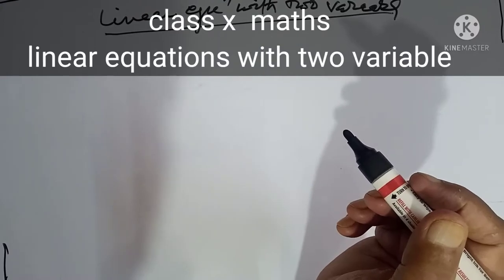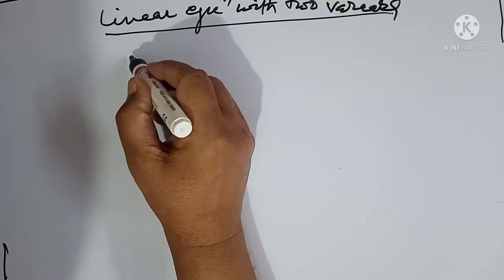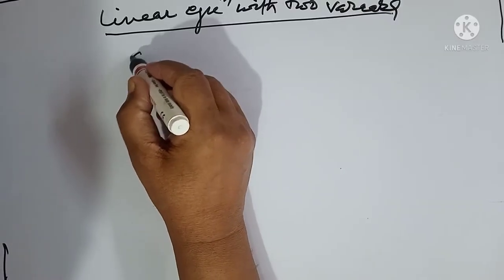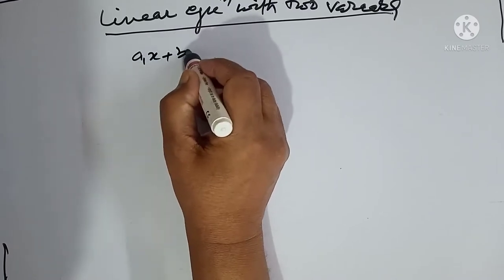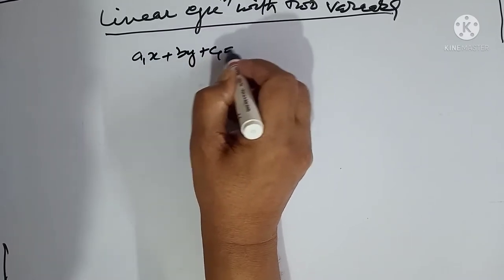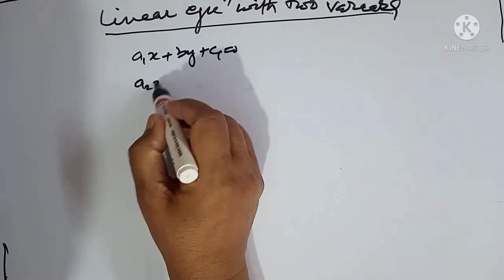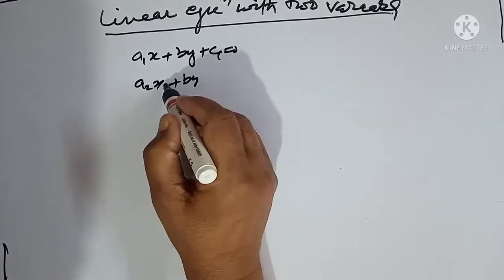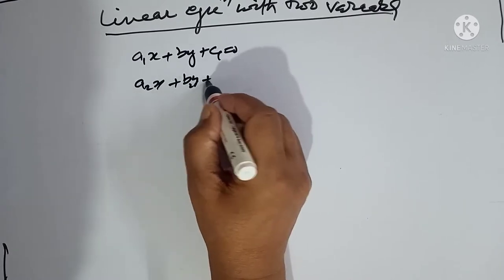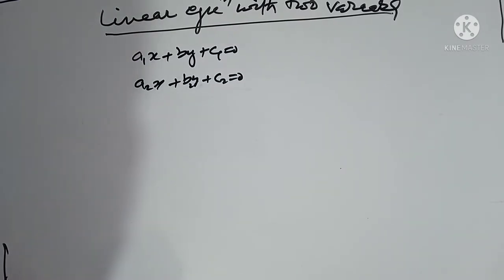Linear equation with two variables. Let us suppose a1x plus b1y plus c1 is equal to 0, and a2x plus b2y plus c2 is equal to 0. These are two linear equations with variables x and y.